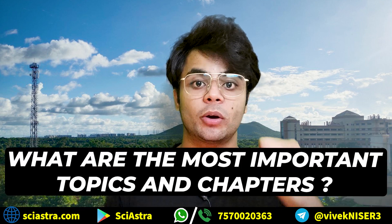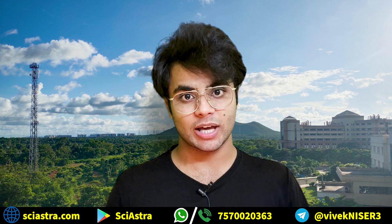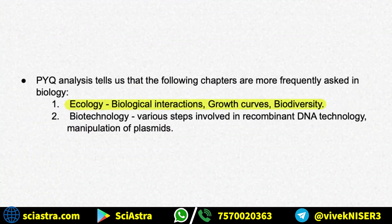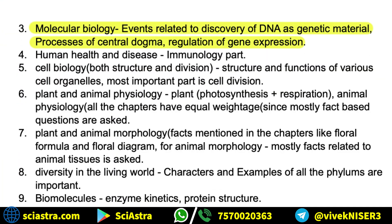Now let's come to the most important topics and chapters you should focus on in the remaining time. First, ecology — the important topics are biological interactions, growth curves, and biodiversity. Then biotechnology — various steps involved in recombinant DNA technology and manipulation of plasmids. Then molecular biology — events related to the discovery of DNA as a genetic material, processes of the central dogma, and regulation of gene expression. Then comes human health and diseases — the immunology part is most important.